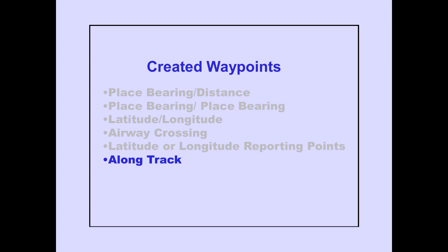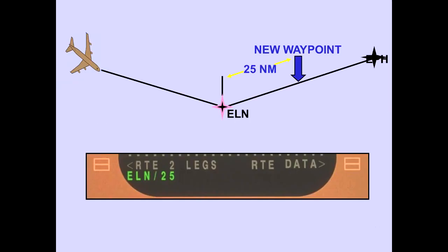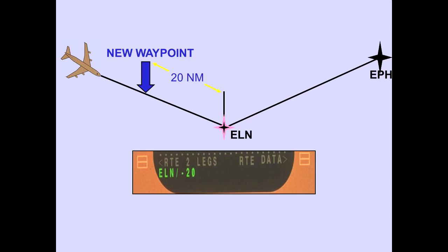Finally, let's look at identifying an along-track waypoint. An along-track waypoint is used to add a new waypoint along the current route. The new waypoint is created by referencing an existing route waypoint, followed by a slash, and then the distance. In this example, we are creating a new waypoint 25 nautical miles past the reference route waypoint. An along-track waypoint can only be entered on the legs page over the reference waypoint. Creating a new waypoint before the reference route waypoint requires the entry of a negative distance.